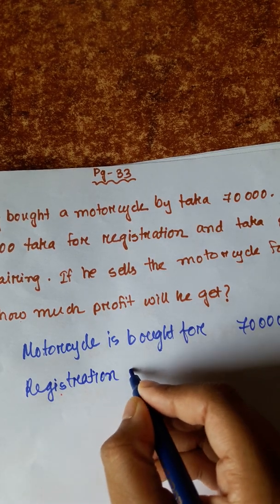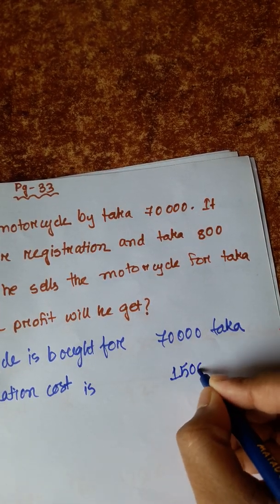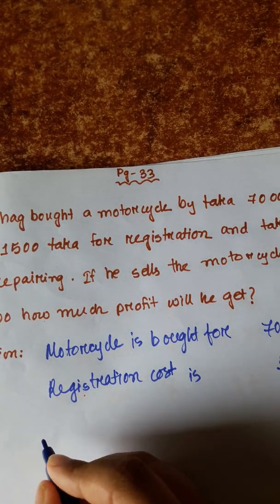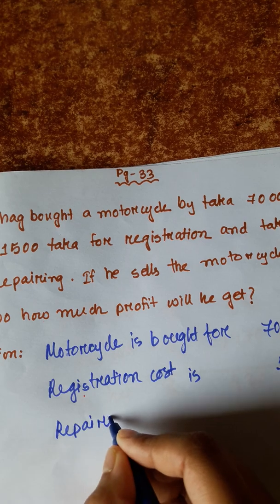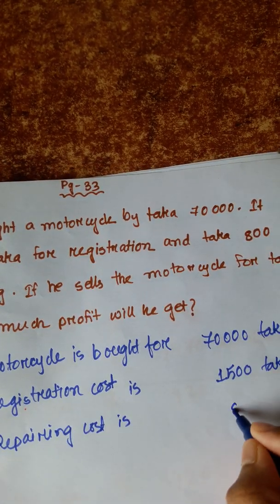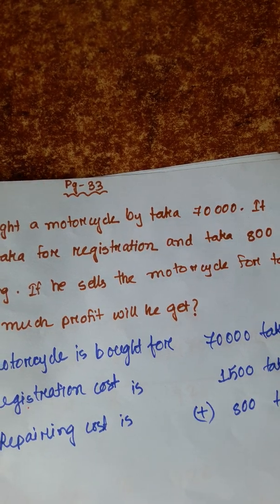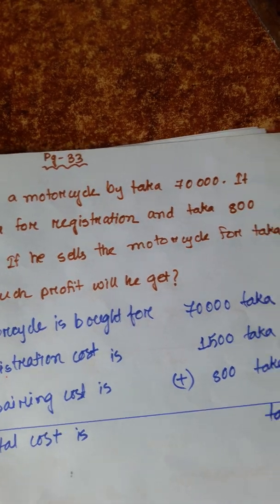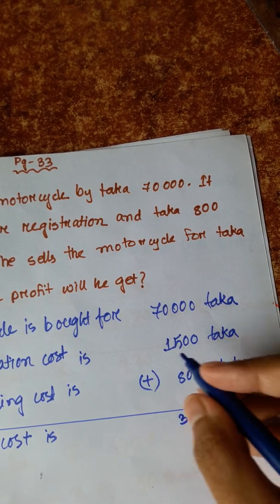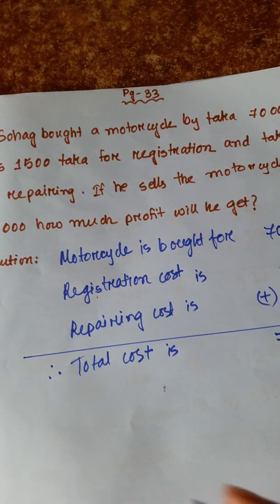Registration cost is 1,500 taka and repairing cost is 800 taka. So total cost is: 0 plus 0 is 0, 8 plus 5 is 13 write 3 carry 1, 1 plus 1 is 2 plus 7 is 9. Total is 72,300 taka.